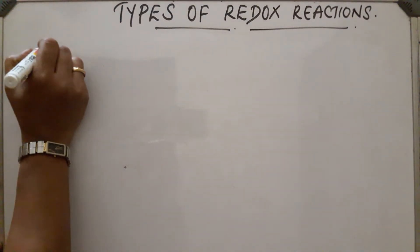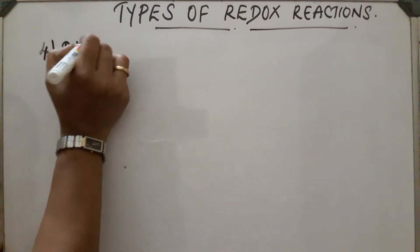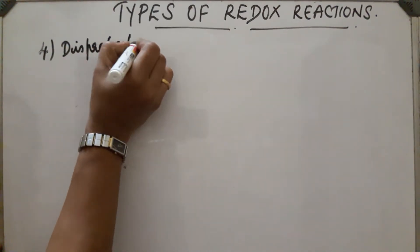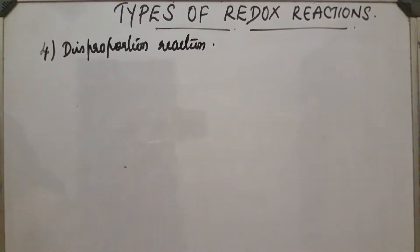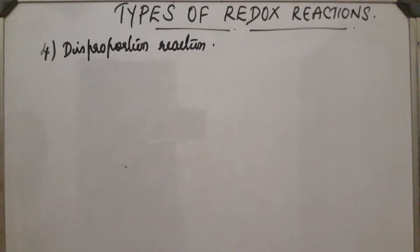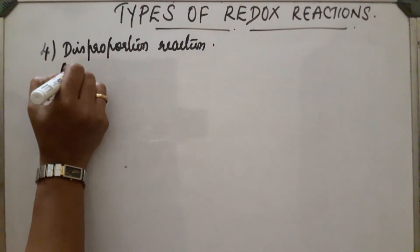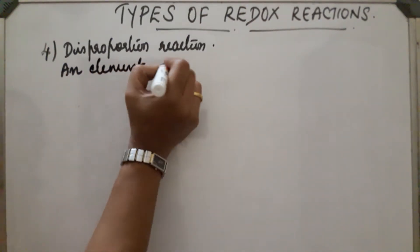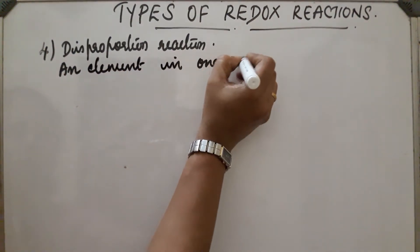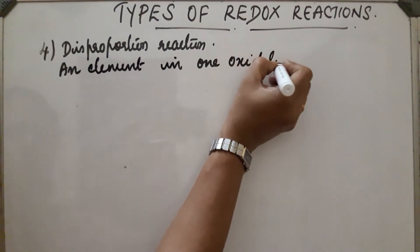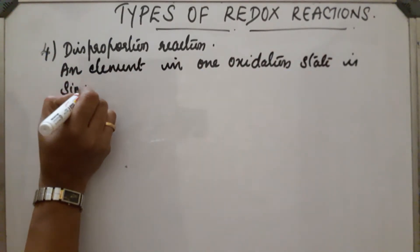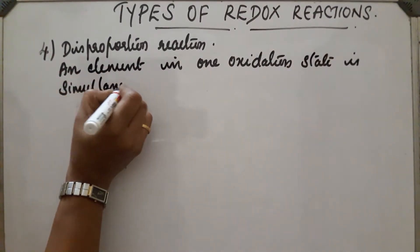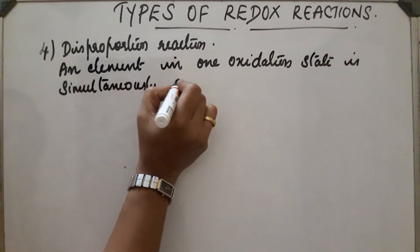The fourth type of redox reaction is the disproportionation reaction. This reaction involves an element in one oxidation state that is simultaneously oxidized and reduced.